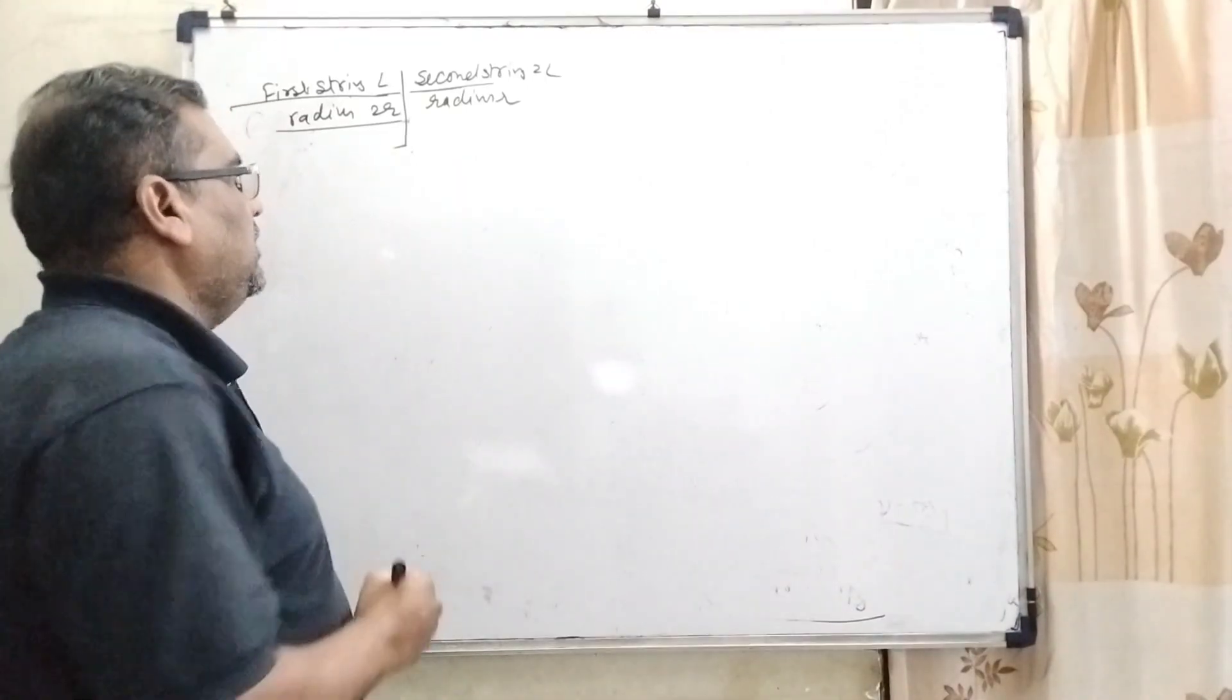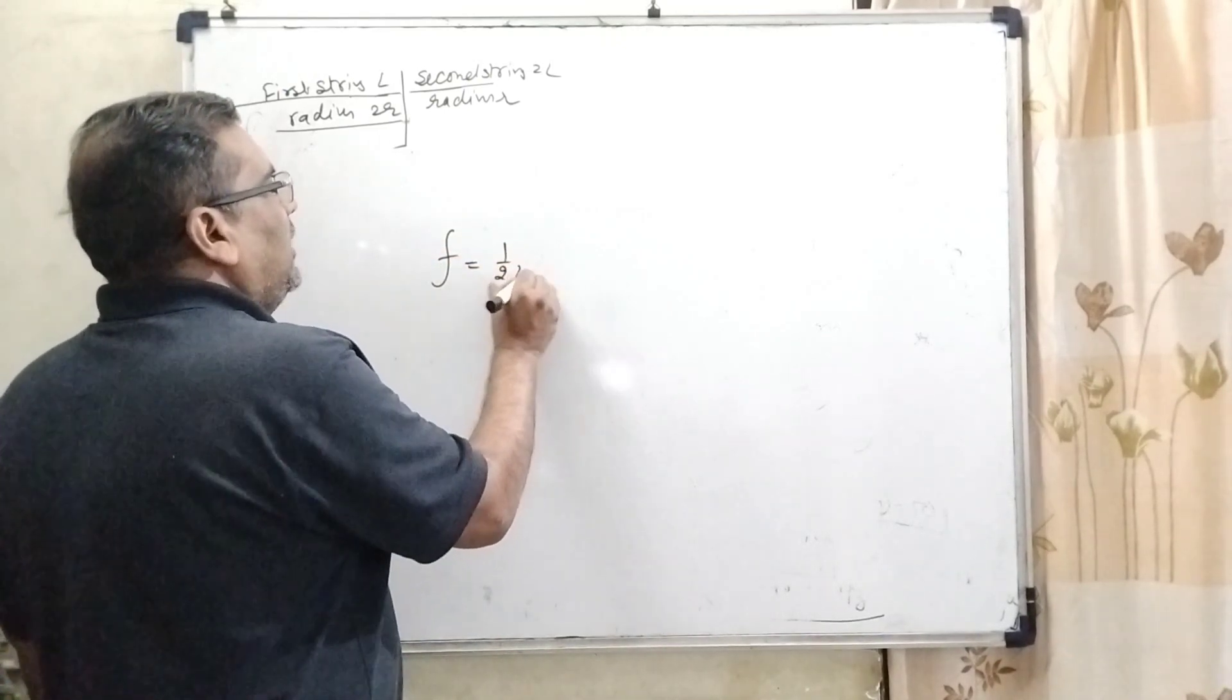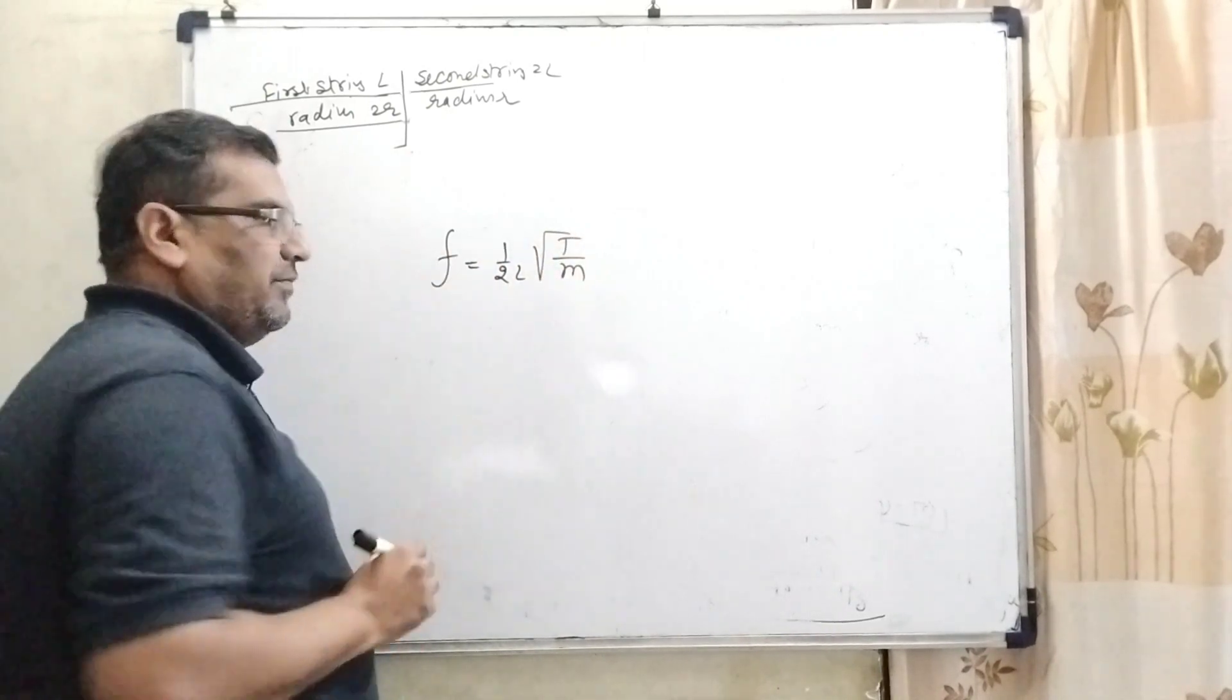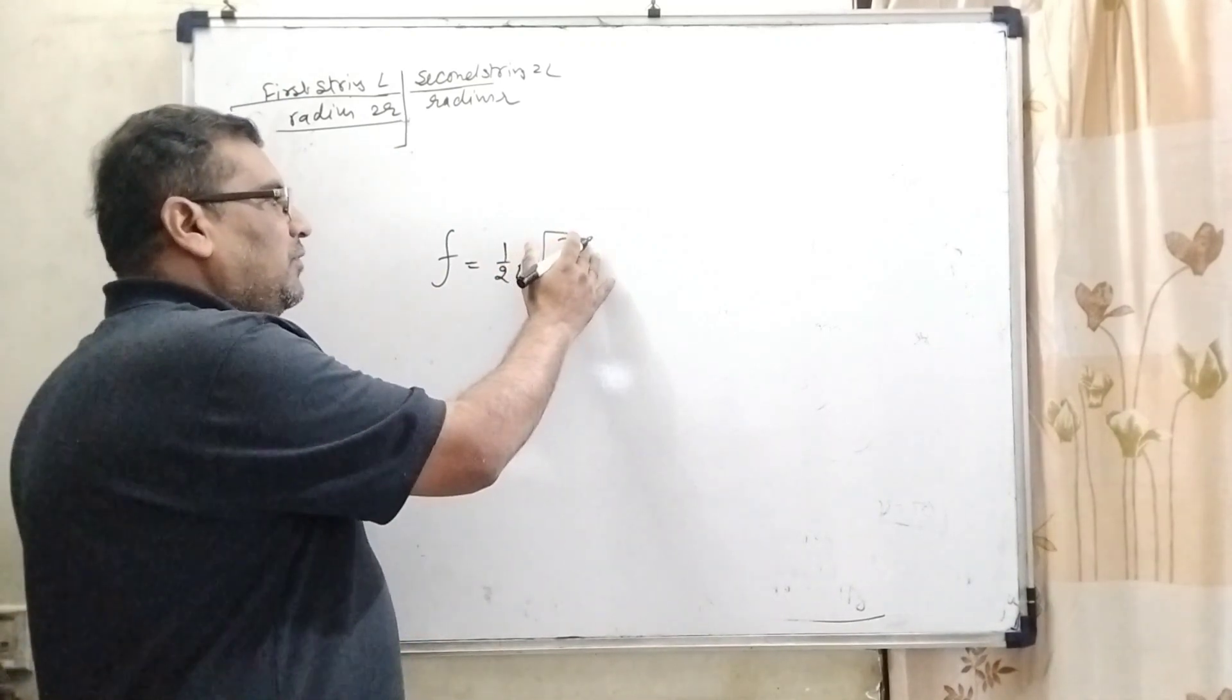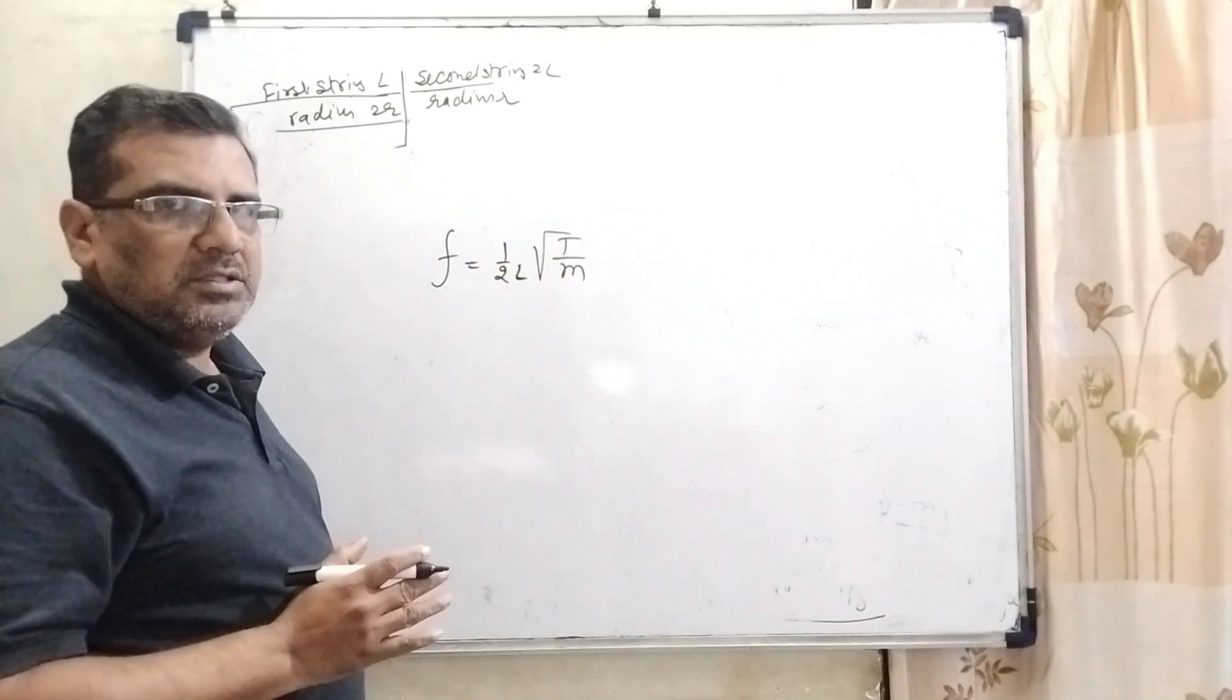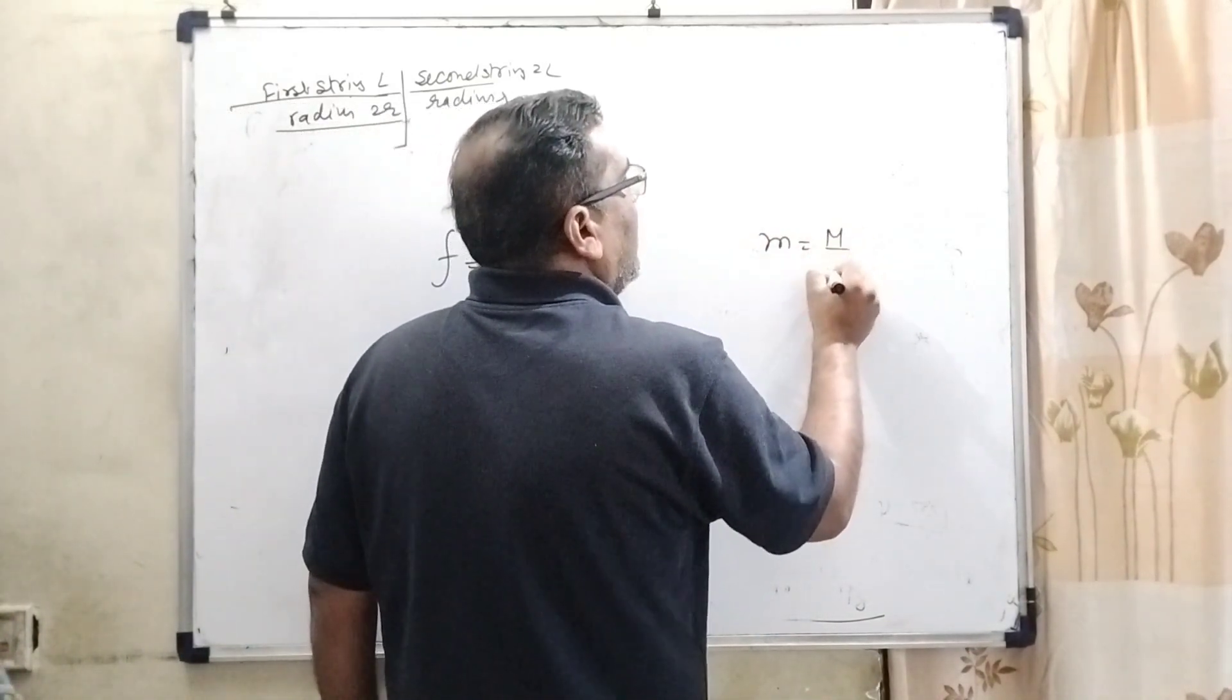Here we are using the formula for fundamental frequency. First mode, that is f equal to 1 upon 2L root T by M. Here f is frequency. L is length of the string or wire. T is the tension force. And M, here M is very important. M is not mass. Here mass per unit length. So M can be written as capital M by L.